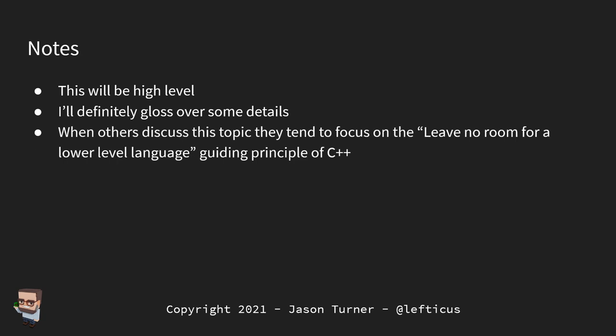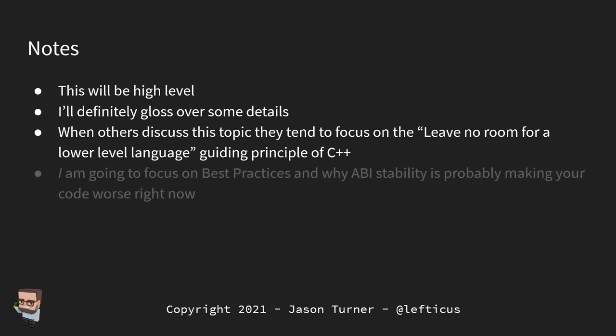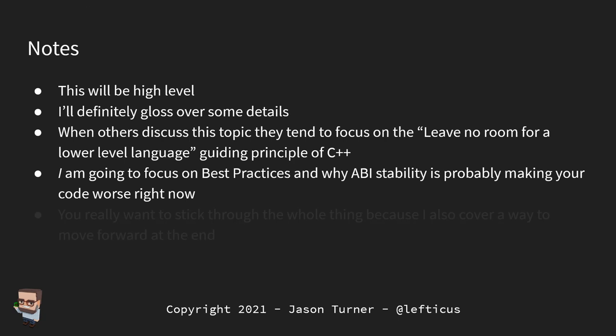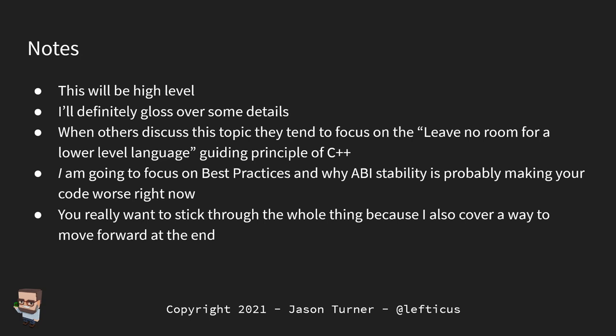When others discuss the topic of ABI breakage, they tend to focus on things like the C++ design principle that it would leave no room for a lower-level language, and we'll see how theoretically not being willing to break ABI is a problem for performance. I'm going to mostly focus on best practices and why ABI stability is probably making your code and your company worse right now — why we actually need to break ABI stability to help you move forward and have better code.